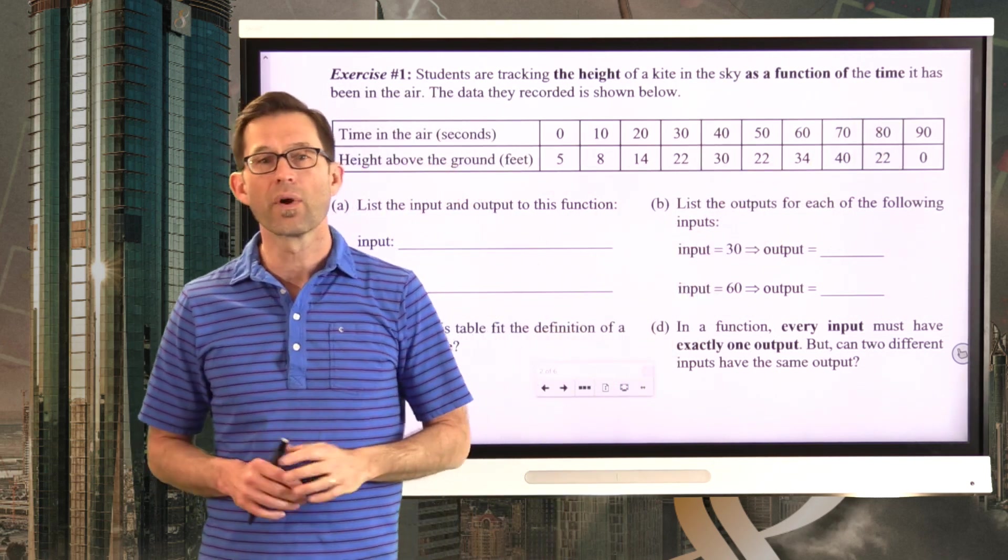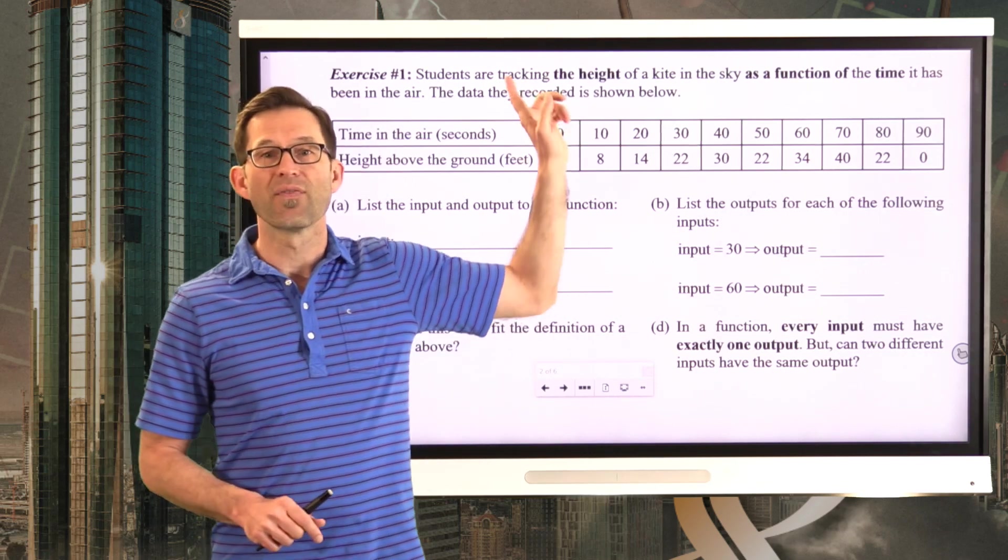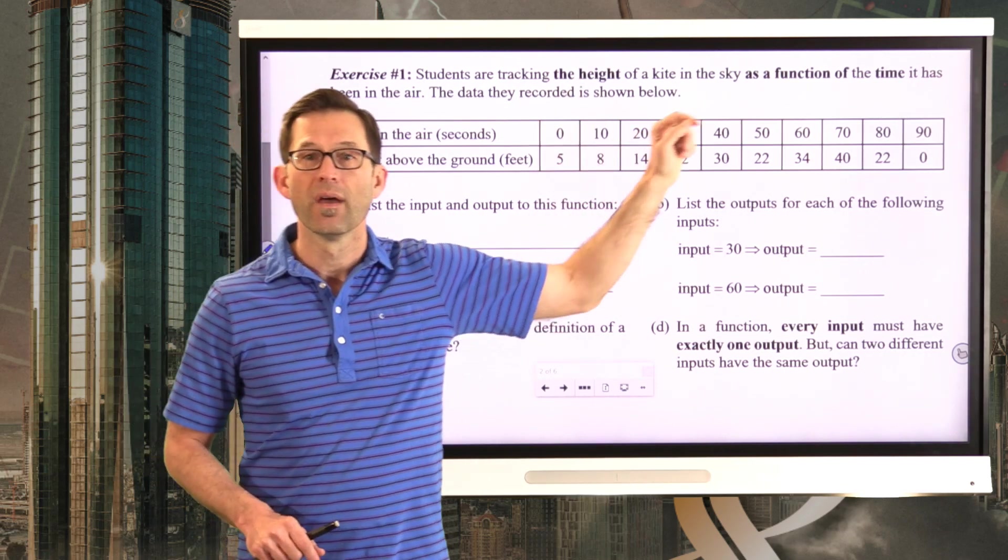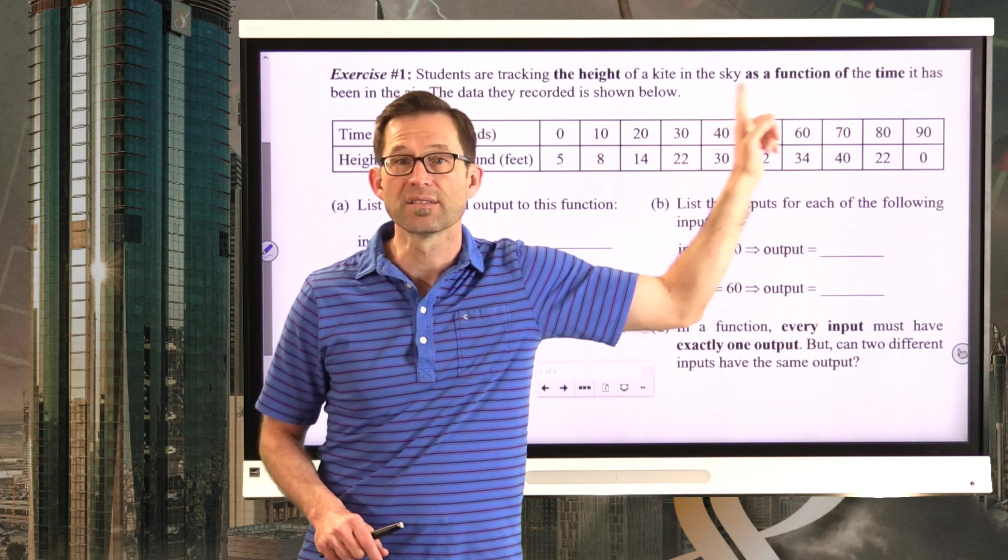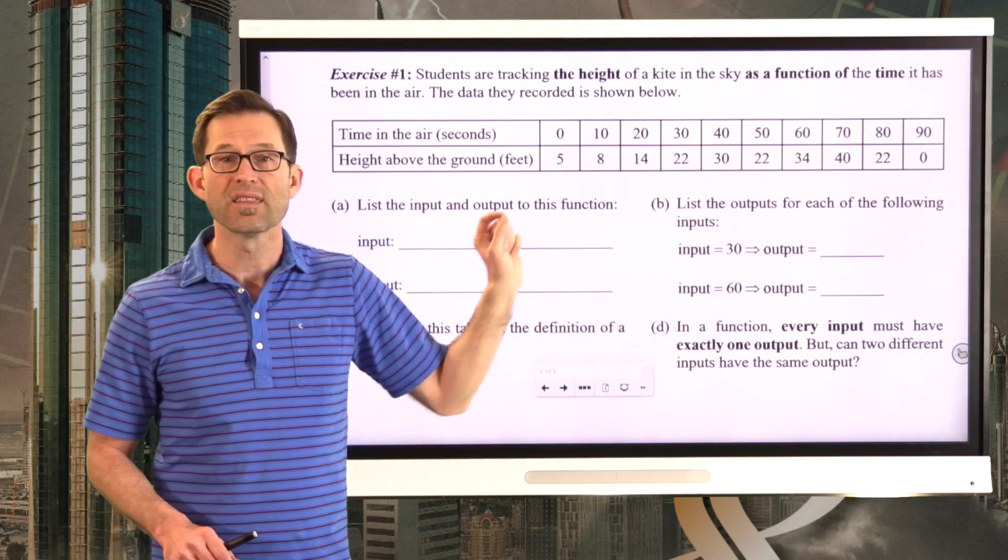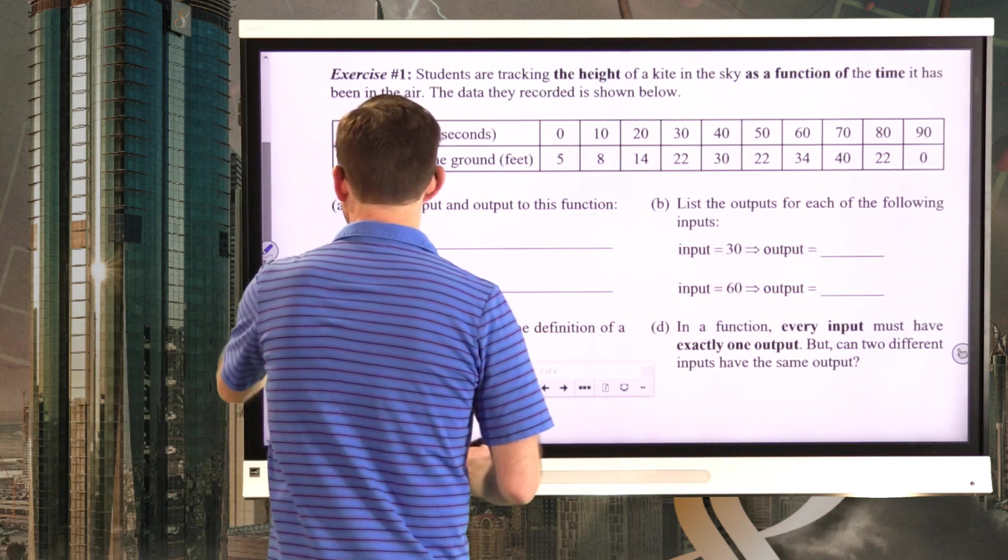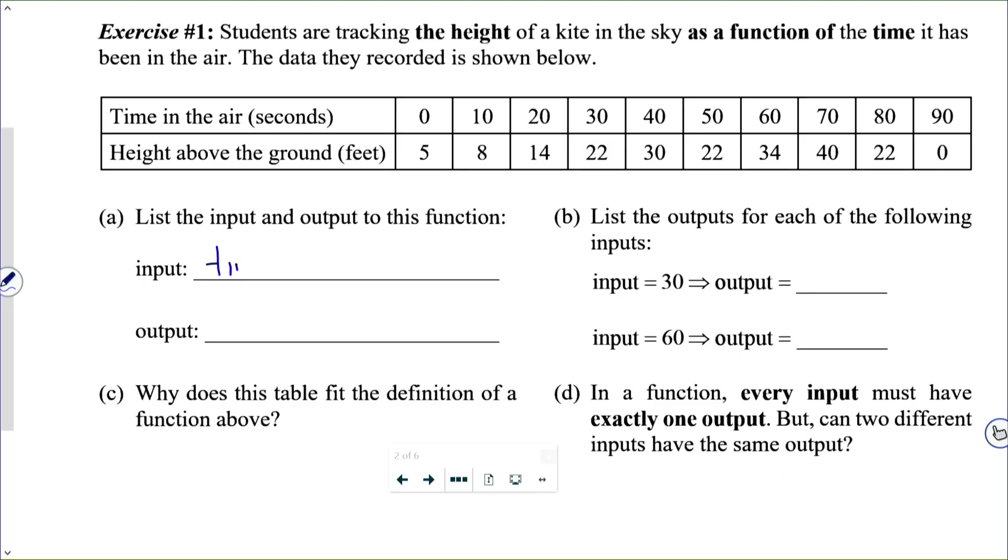The height as a function of the time. When you see a phrase like that, blank as a function of blank, it means that the height is the output and the input in this case is time. So in letter A, when they ask us to list the input and the output to the function, the input is the time in seconds and the output is the height in feet.